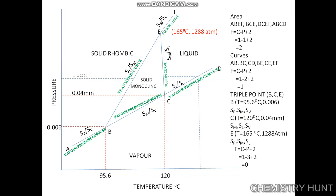At 1 atmospheric pressure and 444.6 degrees Celsius, sulphur starts boiling, which corresponds to the vapour pressure curve. At point G, we see dashed lines representing metastable equilibria. The dashed line extending AB represents sulphur rhombic in equilibrium with sulphur vapour beyond the stable region. Similarly, CG shows sulphur monoclinic in equilibrium with sulphur vapour, and GE shows sulphur monoclinic in equilibrium with sulphur liquid. These dashed lines represent metastable equilibrium.